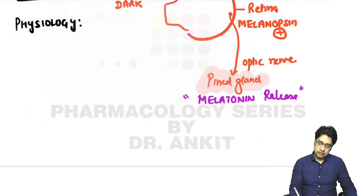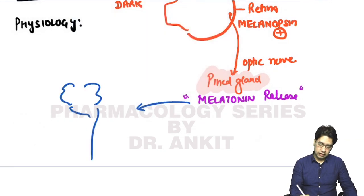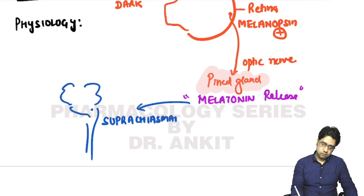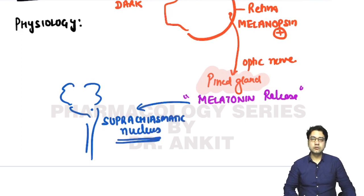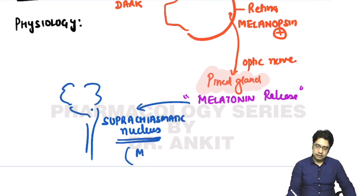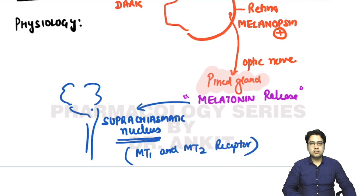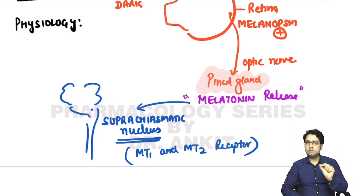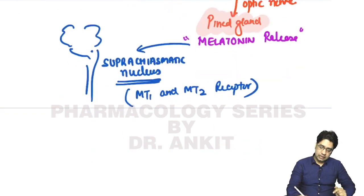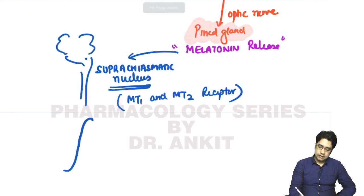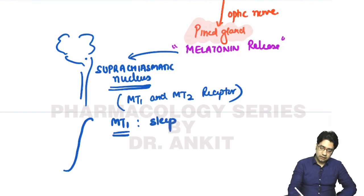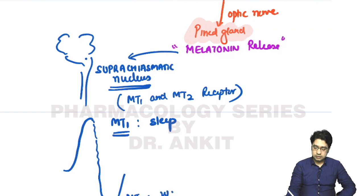The released melatonin travels to the suprachiasmatic nucleus of the brain, where it acts on MT1 and MT2 receptors. When melatonin levels are high due to darkness, it acts on MT1 receptors, which stimulate sleep.